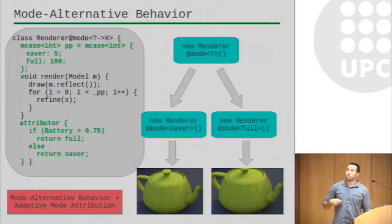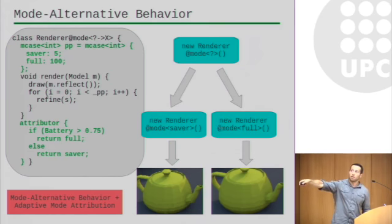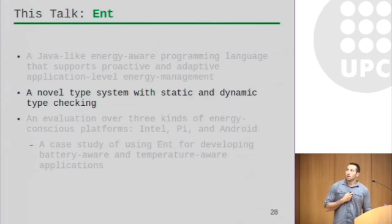So for example, if we create a renderer with the saver mode, we will implicitly project PP with that mode here and we'll get a lower quality renderer. If we create one with the full mode, we will get a higher quality renderer. And so we can combine this mode-alternative behavior with this idea of this dynamic mode attribution to get a very principled form of mode-alternative behavior that's based on an object's mode type. So if we have an attributor that resolves based on some kind of battery level, then when we snapshot this object and the battery is high, we're going to project and get this high quality renderer. And if it's low, we're going to save energy and go with the lower quality renderer here.